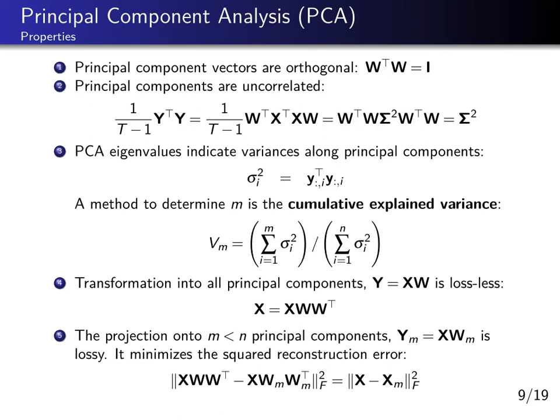But if we use M smaller than N principal components — keeping only a few and discarding others — we produce a reduced dimension dataset Y_M equals X W_M, containing the first M principal component vectors. This is a lossy projection. It can be shown that this projection not only maximizes the variance of the data projected onto the vectors W, but also minimizes the squared reconstruction error.